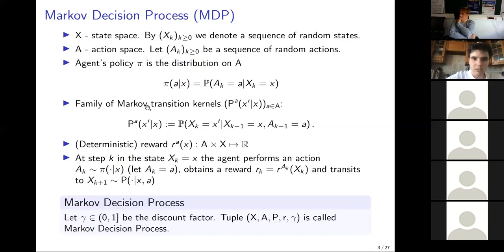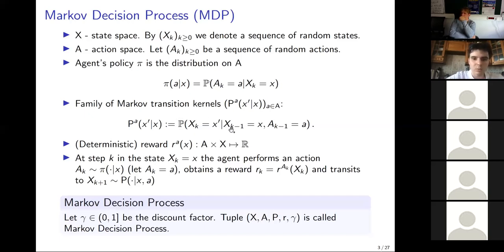Для задания марковского процесса принятия решений нам нужно задать семейство переходных вероятностей, или марковских переходных ядер — семейство условных вероятностей, параметризованных действием a. Это вероятность перейти в состояние x', если мы находясь в состоянии x совершили действие a. Определение подходит для MDP с дискретным пространством действий и состояний. Есть также параметр gamma от нуля до единицы — дискаунт-фактор.